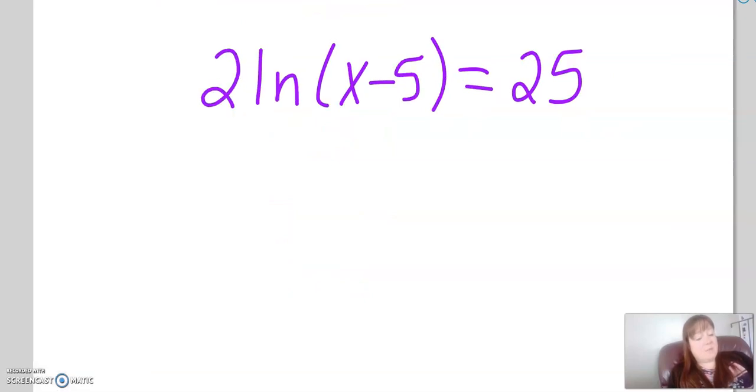For this one, same thing. We need to be able to get it into that basic form of log base b of, sorry, not of x, of my argument equals my exponent, because then we can switch it around so we have base to the exponent equals the argument.